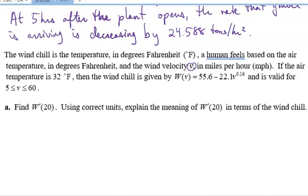Velocity is V in miles per hour. So if the air temp is 32 degrees Fahrenheit, then wind chill is given by this function and is valid over 5 to 60 miles per hour. So we're looking for W prime of 20. W represents the wind chill function. So we're doing a rate of change of the wind chill at specifically V equals 20. And that's not a time here. That's a V velocity.